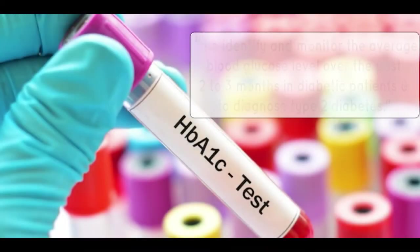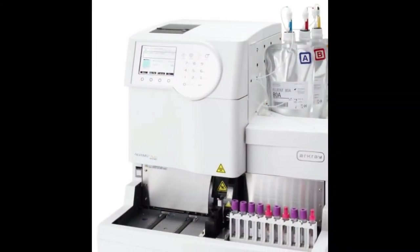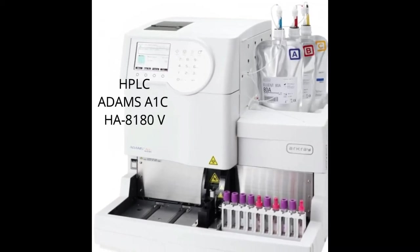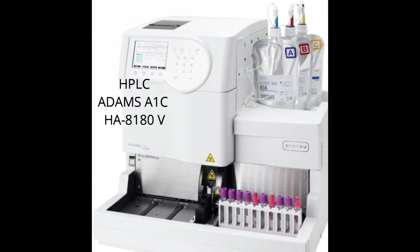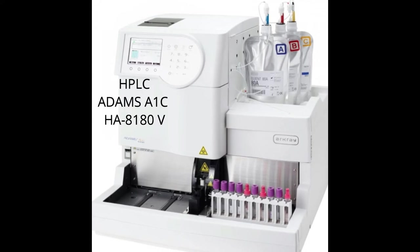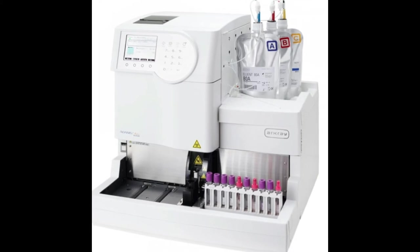The HbA1c test is carried out to identify and monitor the average blood glucose level over the past 2 to 3 months in diabetic patients. It can also be used to diagnose type 2 diabetes. The HbA1c test is performed by high performance liquid chromatography (HPLC). The instrument involved is the Adams A1c HA8180V, which is a fully automated HPLC machine that can detect the presence of HbA1c quantitatively.